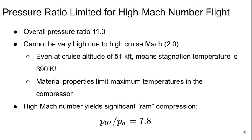The material properties really limit the maximum temperatures that you can allow in the compressor. And this high Mach number basically yields a significant RAM compression too. So P02 over PA is 7.8. You're getting a lot of compression just from the fact that you're flying around so fast.